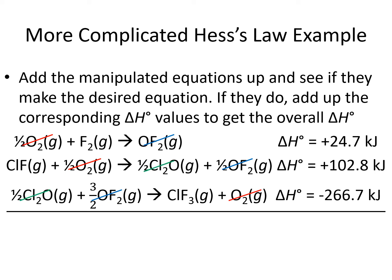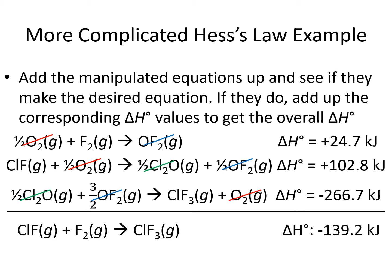Finally, the Cl2O ends up cancelling out — we have 1/2 on each side of an arrow. The things that didn't cancel out were the ClF, F2, and ClF3, and they have the coefficients that we wanted. We've built our overall equation. Since we've double-checked that our manipulated equations build the overall equation, we can now add the manipulated delta H's: positive 24.7 plus positive 102.8 plus negative 266.7 gives us an overall delta H for this reaction of negative 139.2 kilojoules.